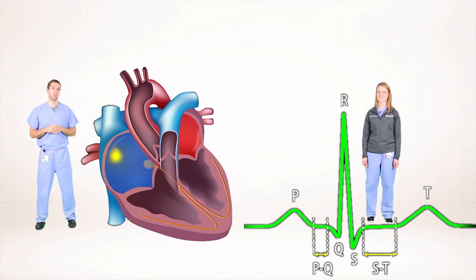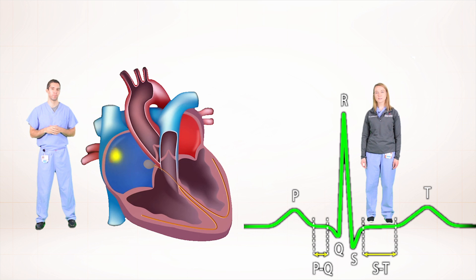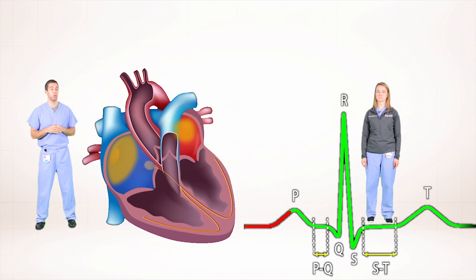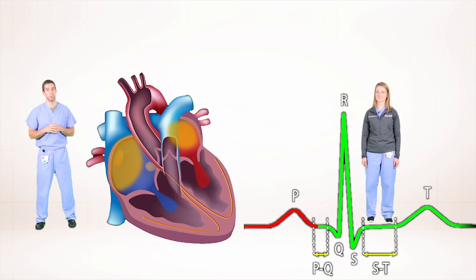Here we are next to the electrical activity of the heart. Let's pair this with our EKG tracing. The EKG tracing starts about 40 milliseconds after the SA node fires. This begins with the P wave. The P wave represents atrial contraction.